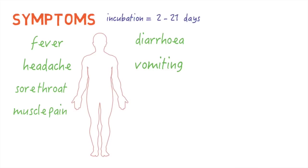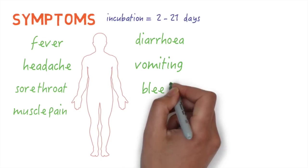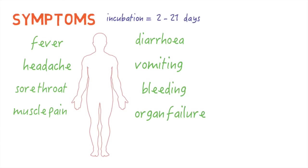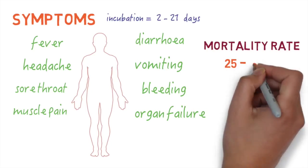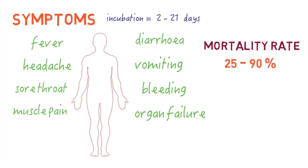When the symptoms get worse, people can sometimes start to bleed and the vital organs start to shut down, leading to death. The virus has a very high death rate and can kill between 25 to 90% of those it infects.